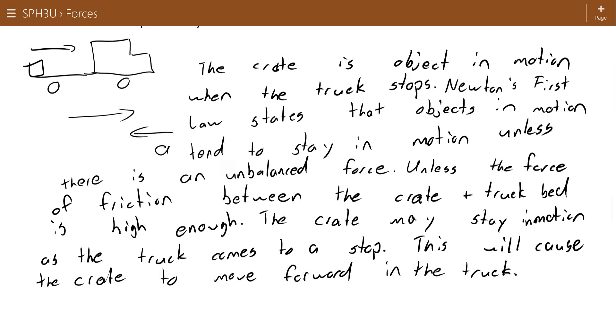So the crate is an object in motion when the truck stops. That's what's happening here. Newton's first law states that the object in motion tends to stay in motion unless there is an unbalanced force. Unless the force of friction, that would be our unbalanced force, between the crate and the truck bed is high enough, the crate may stay in motion as the truck comes to a stop. This will cause the crate to move forward within the truck. So that's again using our structure to try and answer conceptual problems.